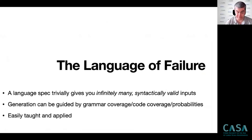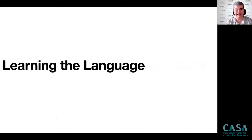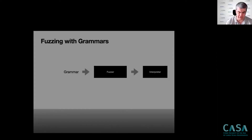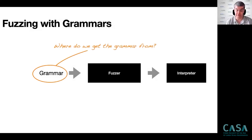The language of failure needs to be specified by a grammar — and that's the problem, because people don't like to specify things. In my 30 years in this profession, people don't like specifications. Writing a complete grammar that has all the bells and whistles can easily set you back a couple of weeks, and if you're under pressure that's not something you want to invest. So we designed techniques to mine such grammars automatically from existing programs.